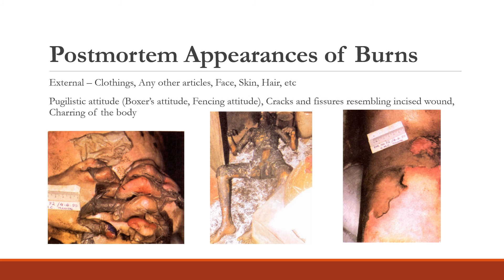Cracks and fissures will be seen on the body, which may resemble incised wounds but should not be mistaken as such — they are due to muscle cracking after heavy burning. Charring of the body gives a black or grayish color appearance; whitish color can be seen in the second stage.